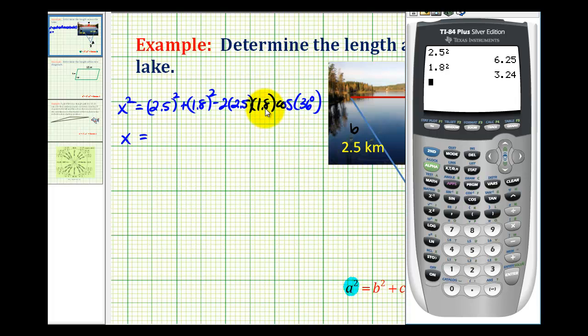And then we're going to subtract this product here. So we'll have 2 times 2.5 times 1.8 times cosine of 36 degrees.